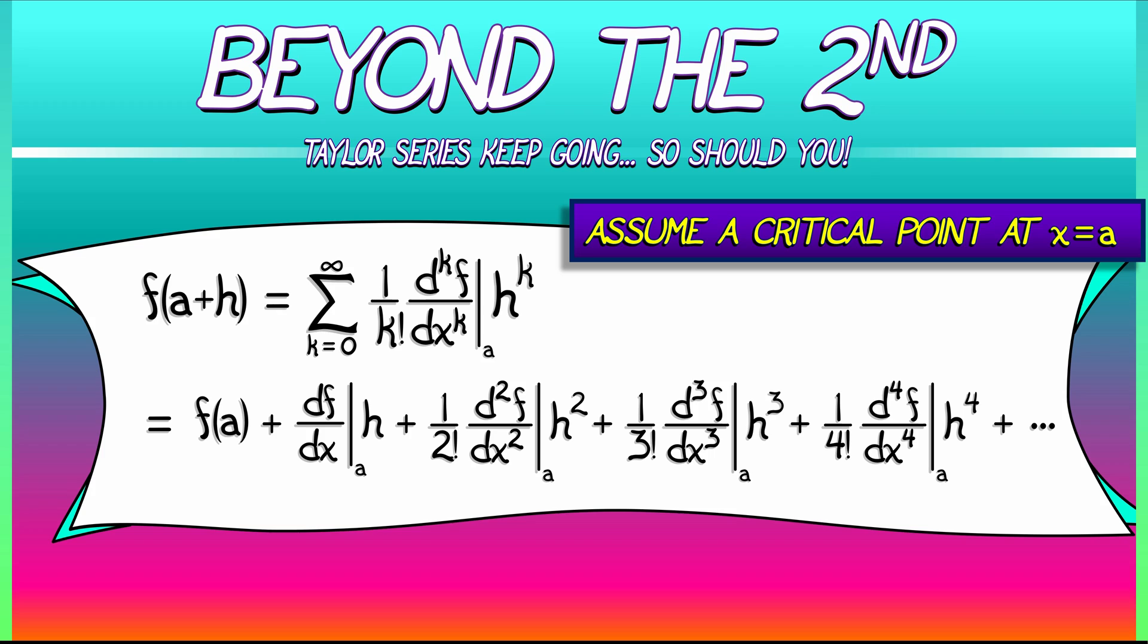If we have a critical point at x equals a, that means the first derivative vanishes. If we have a degenerate critical point, if that second derivative also vanishes, well, we just move to the next term in the Taylor expansion. That would be the third derivative. So what, there's a third derivative test? If the third derivative is non-zero, then that means the function locally looks like a cubic. It looks like h cubed with some constant out in front, and you would have neither a max nor a min.